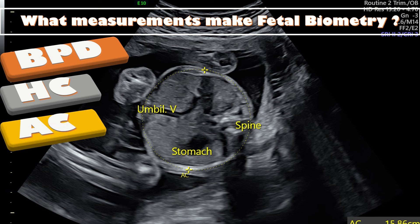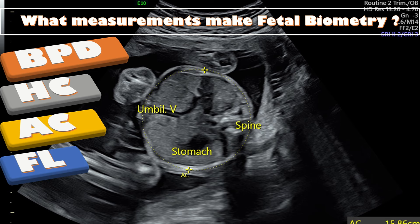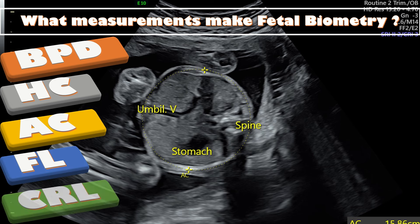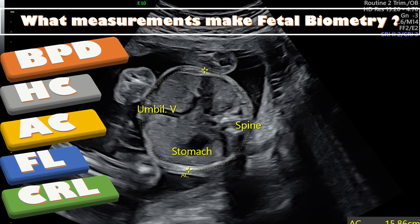Other parameters include the abdominal circumference, which is the length going around the abdomen of the fetus; the femur length, which is the length of the femur bone; and the crown rump length, which is the length from the top of the head to the bottom.